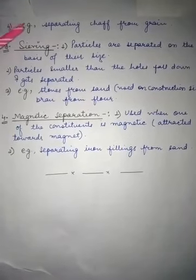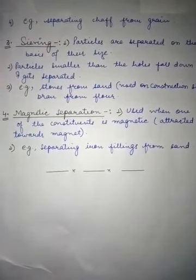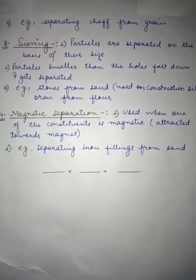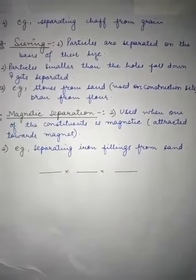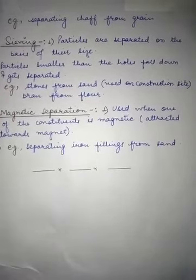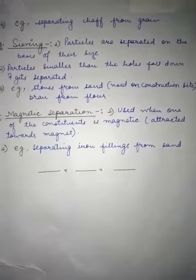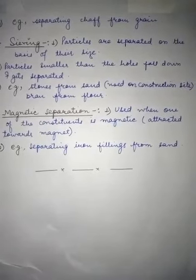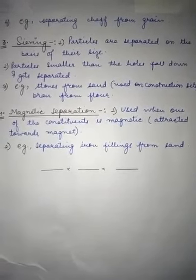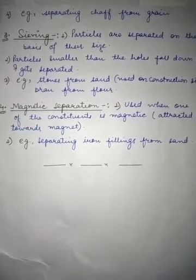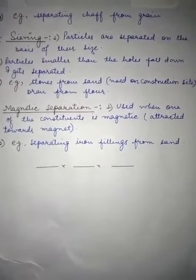Another method is sieving. In sieving, particles are separated on the basis of their size — particles smaller than the holes of a sieve fall through and get separated. Examples include separating stones from sand, commonly used on construction sites, and separating bran from flour, which we use in the kitchen.